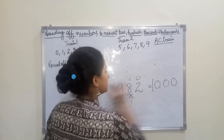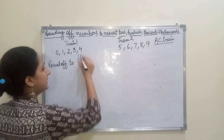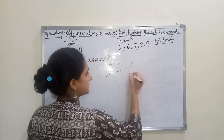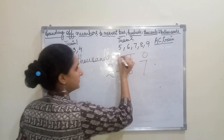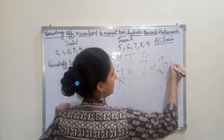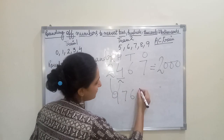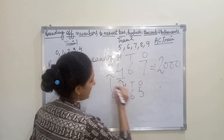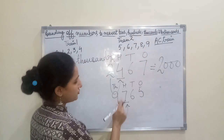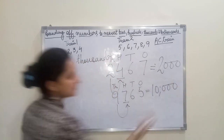Now let's move to rounding off to thousands, which works the same way. Take the example 2467. Write down ones, tens, hundreds, thousands. Mark the previous digit — which is 7. It belongs to Train Two, so one is added to the thousands position. Nine becomes ten and all the remaining digits become zero, giving us ten thousand.